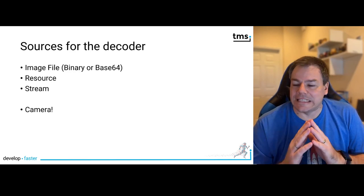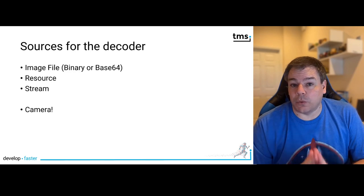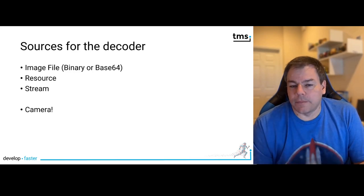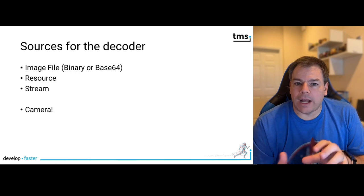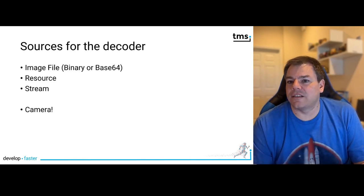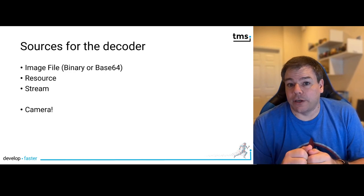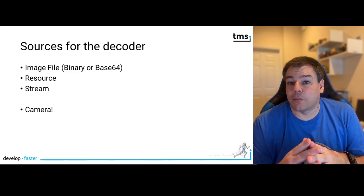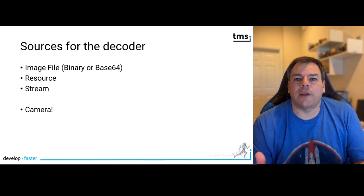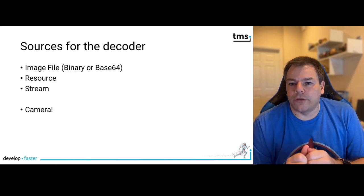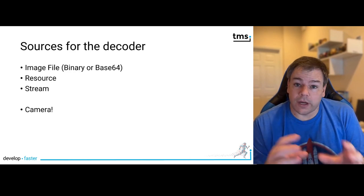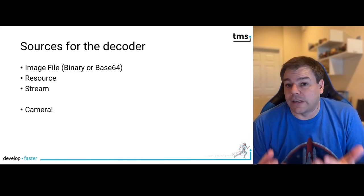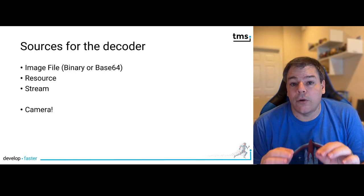But the coolest option is the camera, and this makes these components really, really useful. You can create a mobile application or web application on a mobile device that scans barcodes live using the camera. The components use the existing camera component from TMS software that is also part of the WX pack. You'll find videos about the camera component on the YouTube channel, and hooking up a camera instance to your barcode decoder is very easy.